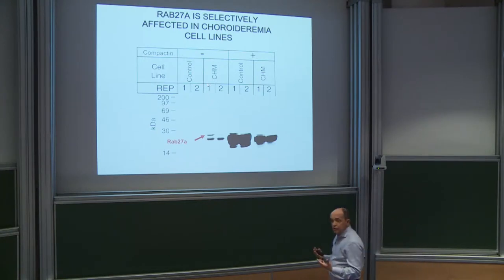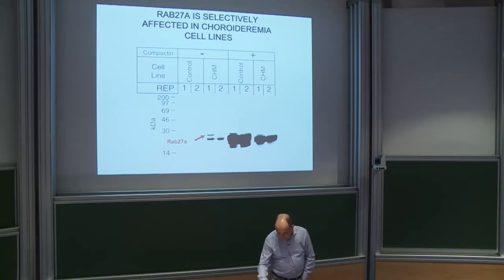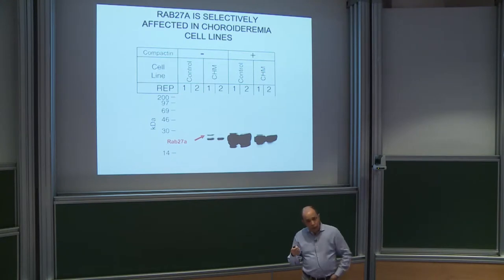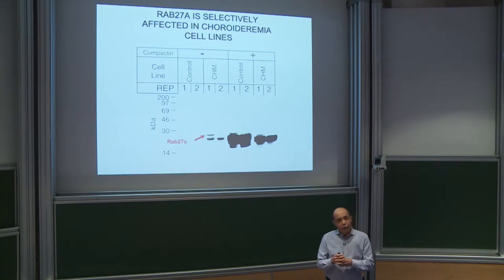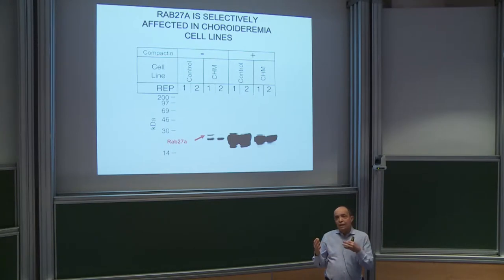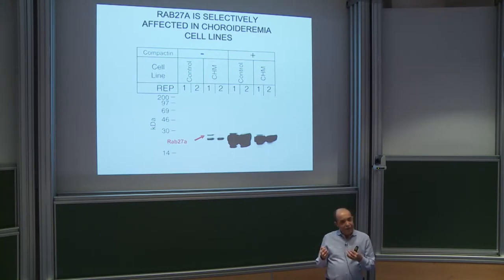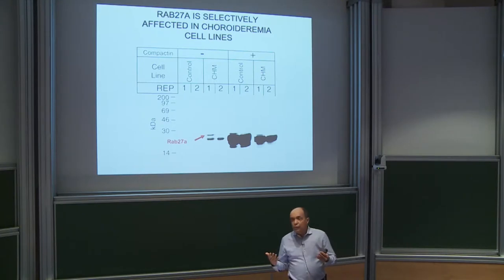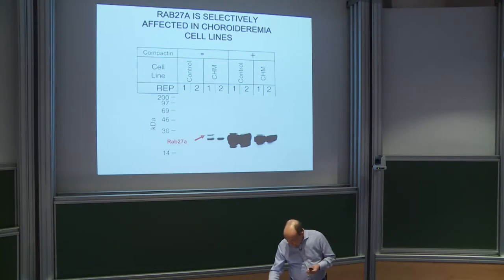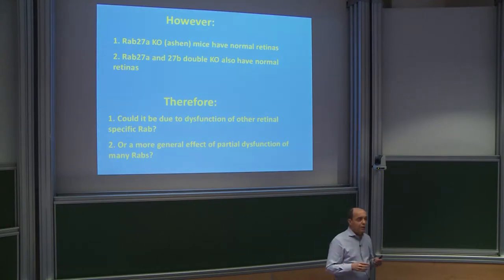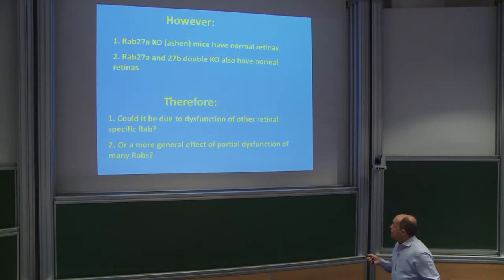We were very excited because we found a protein selectively unprenylated in choroideremia cells, prenylatable in vitro preferentially by recombinant REP1 and not REP2 — exactly what you would predict as the right target. We purified it on the basis of hydrophobicity: initially hydrophilic, we prenylated it in vitro and enriched for hydrophobic proteins. It turned out to be RAB27, since RAB26 was the last one named.